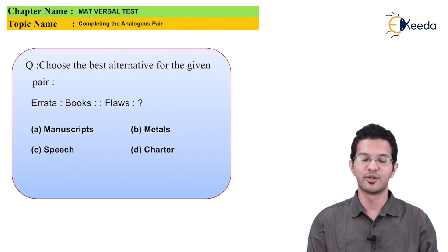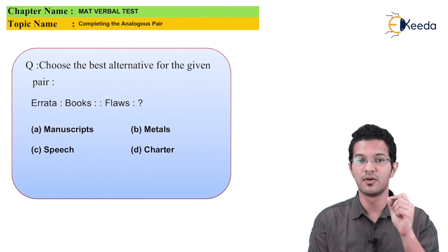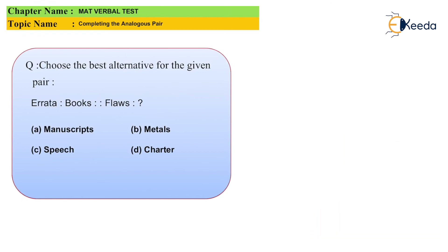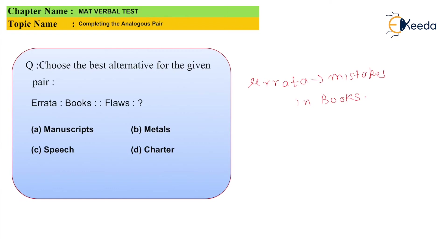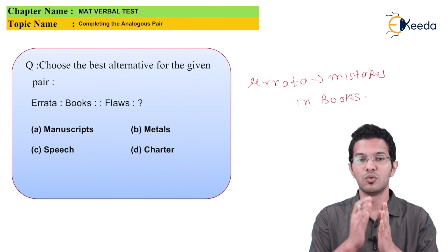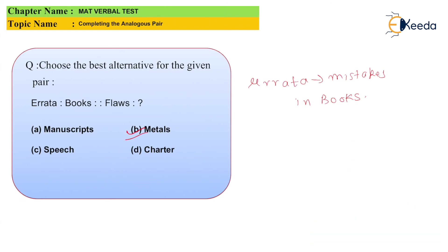The next MCQ: Errata is related to Books. Hence, Flaws are related to what? The word errata means mistakes — so mistakes found in books are called errata. Now, flaws are related to what? The options are: Manuscripts, Metals, Speech, and Charter. Flaws are always associated with metals — if there are any imperfections in metals, we call them flaws. So the answer is Option B, which is Metals.